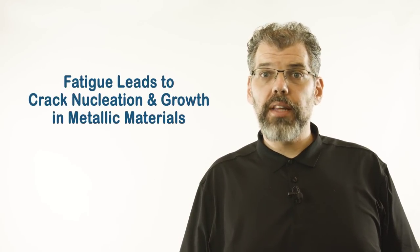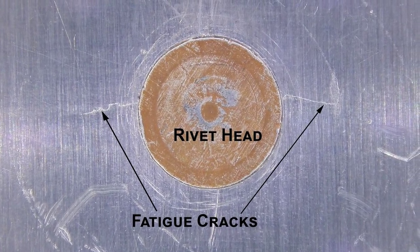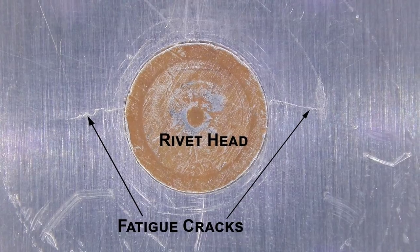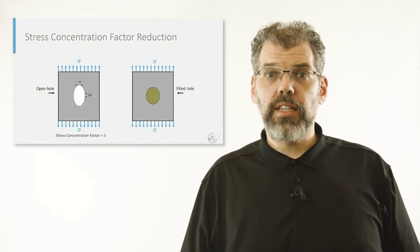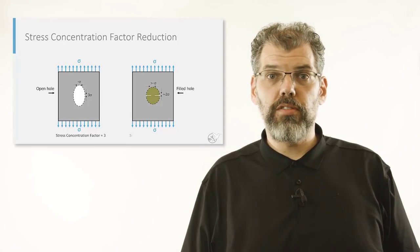If a joint is subjected to repeated loading below its static strength, it can still fail as a result of fatigue. Fatigue was extensively covered in an earlier unit, so the fact that cracks will tend to nucleate at the edges of fastener holes where stress concentration factors are high should come at no surprise. We have also already discussed how hole-filling properties of a rivet can actually help reduce these stress concentration factors.